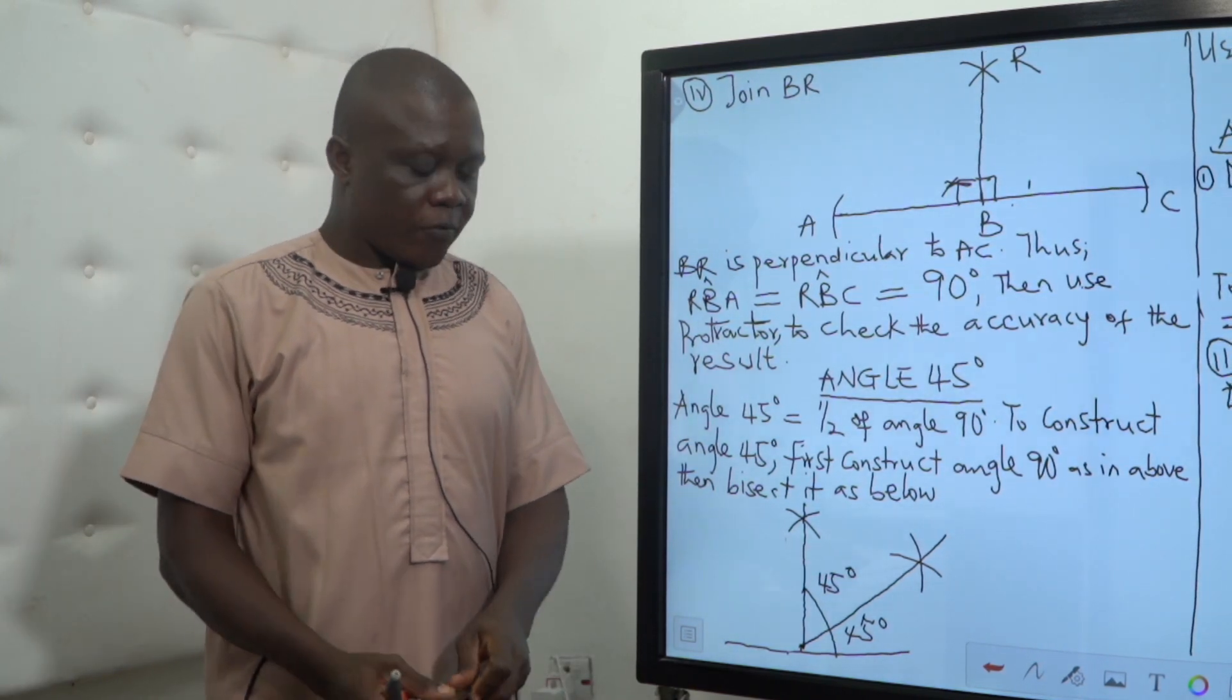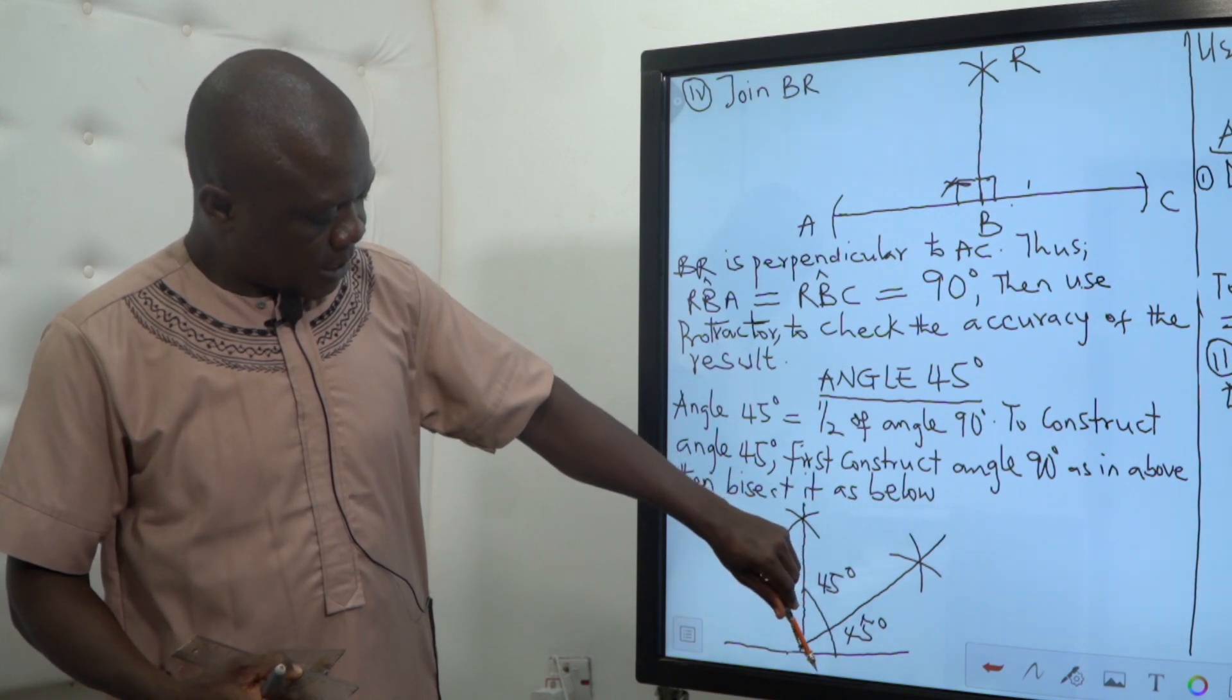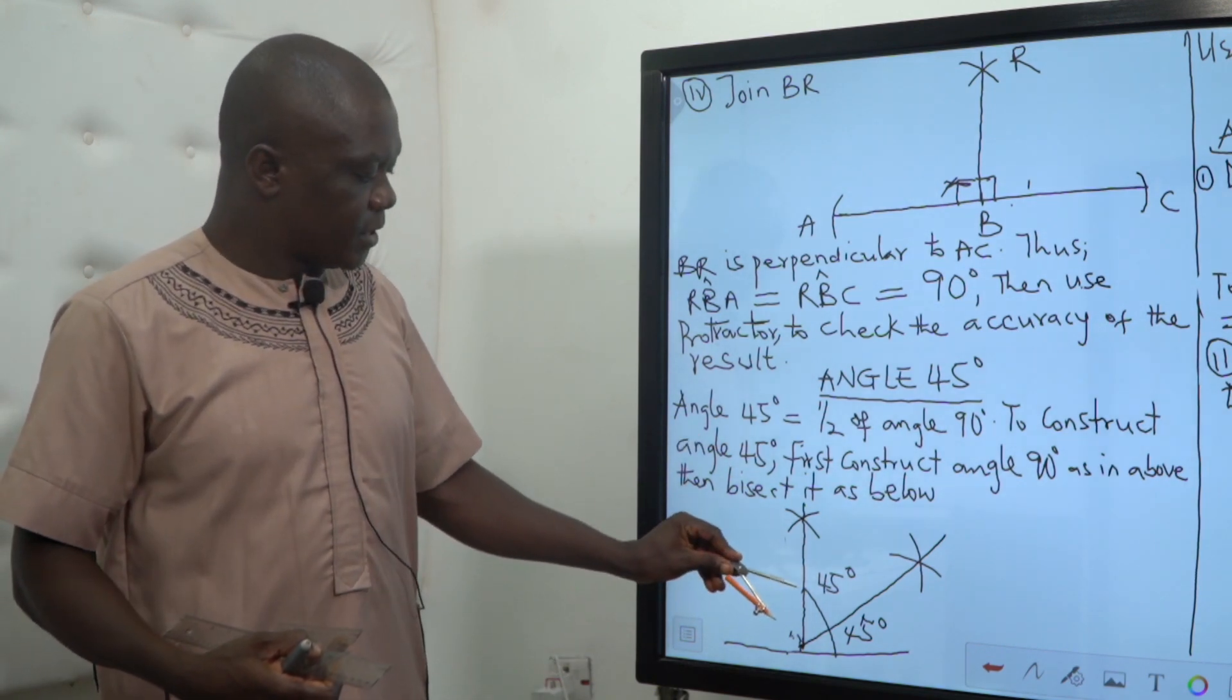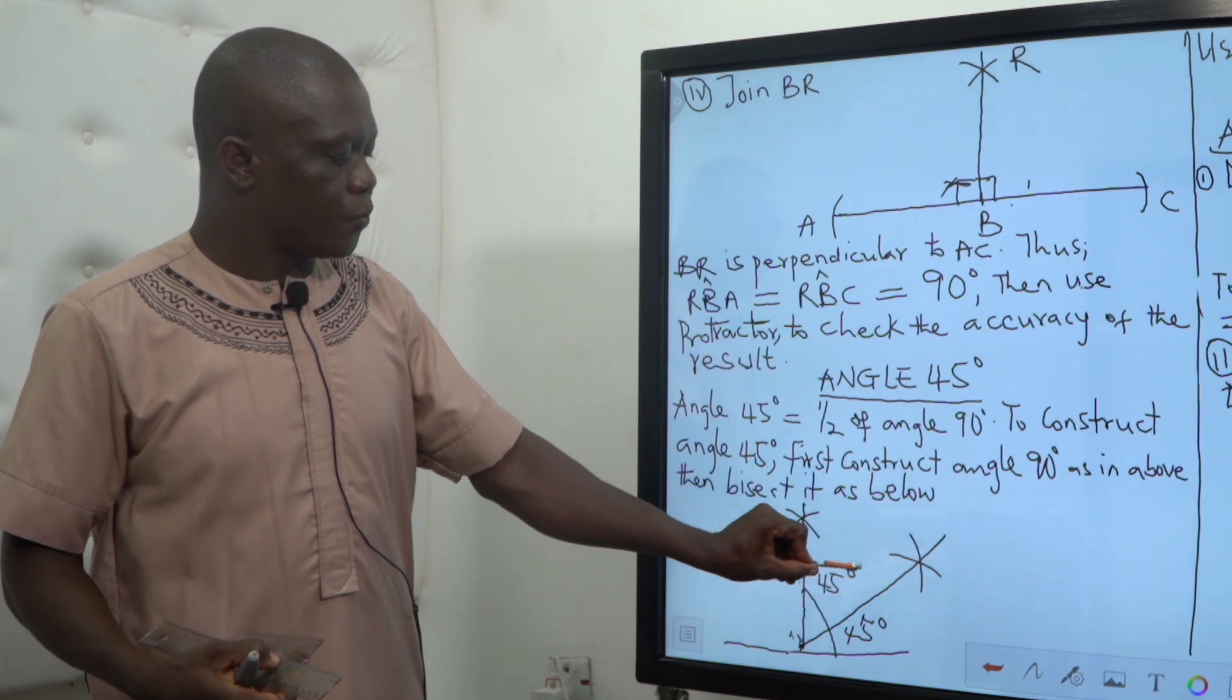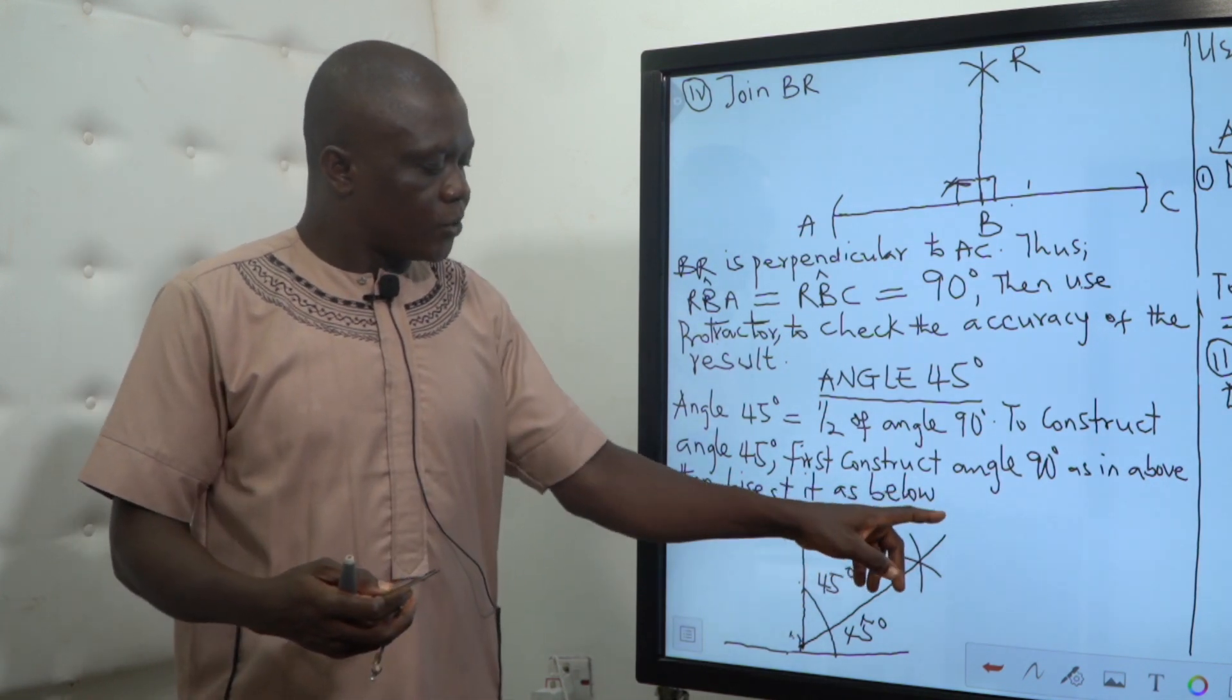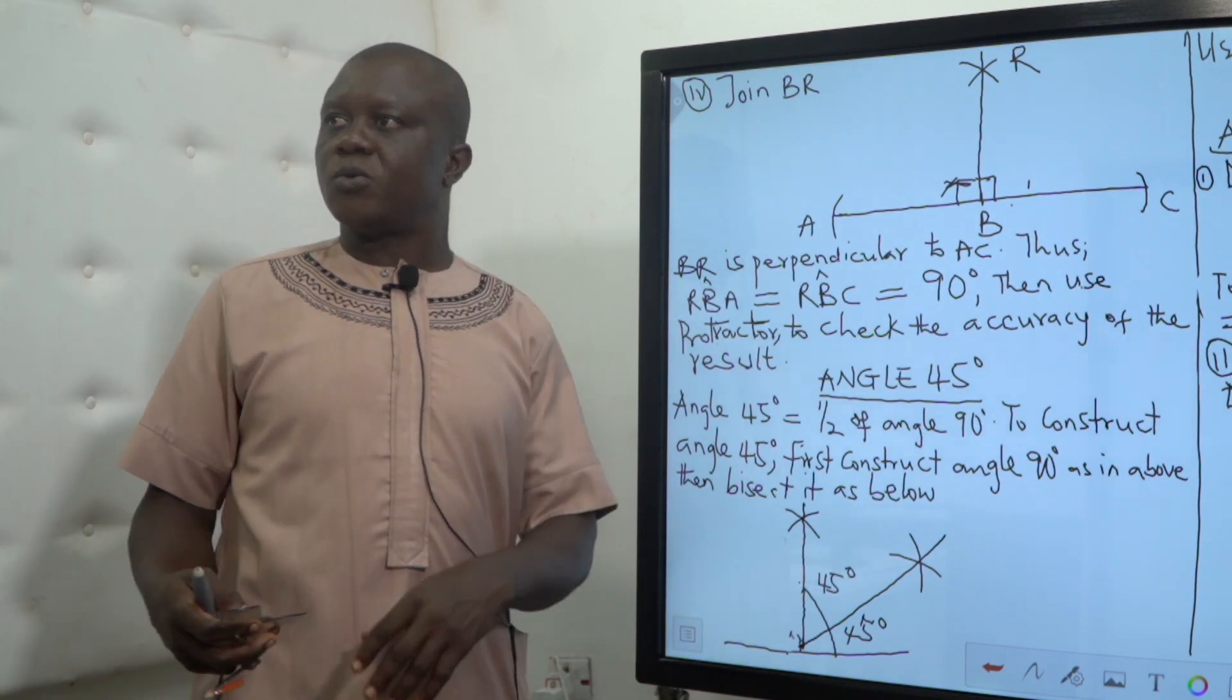Then to construct angle 45, what you will do is that you replace this protractor at this point and allow it to touch the horizontal line and you move upward to touch the vertical line. Then you place it here again and allow the pencil to be anywhere at this open space. You make this arc, and place it back here. You make the other arc. The place where the two arcs meet, you draw a straight line.